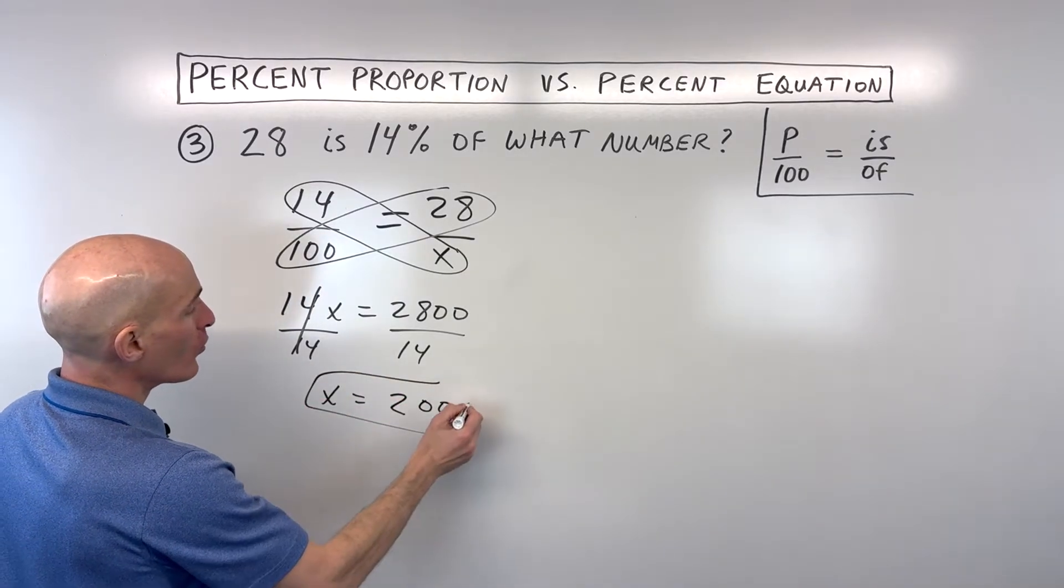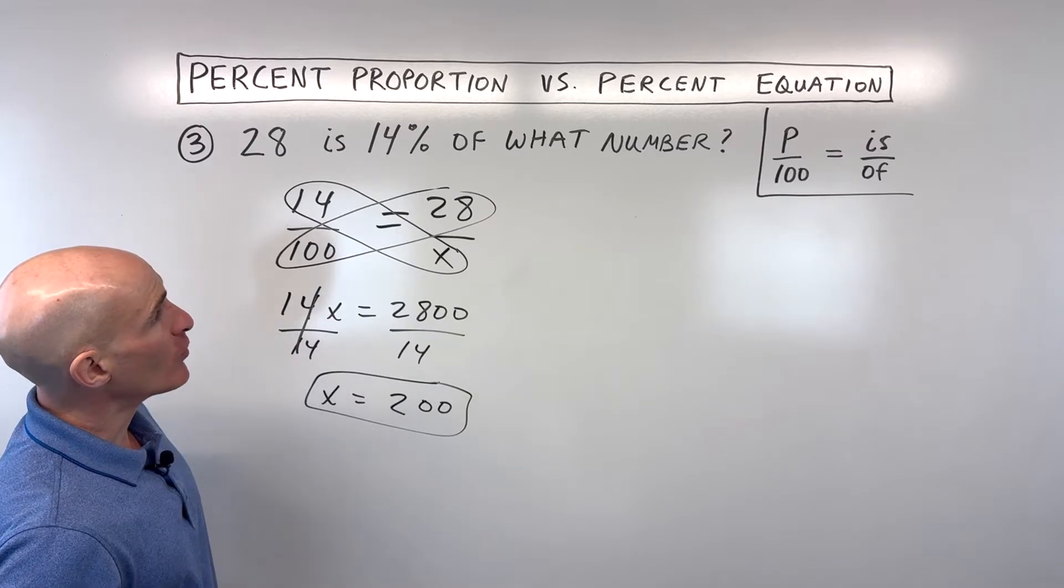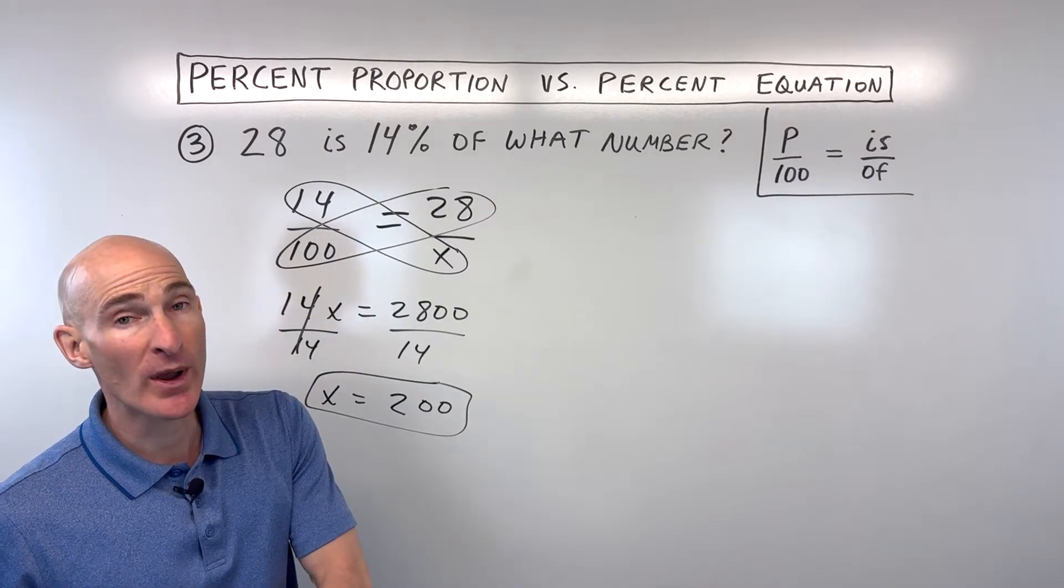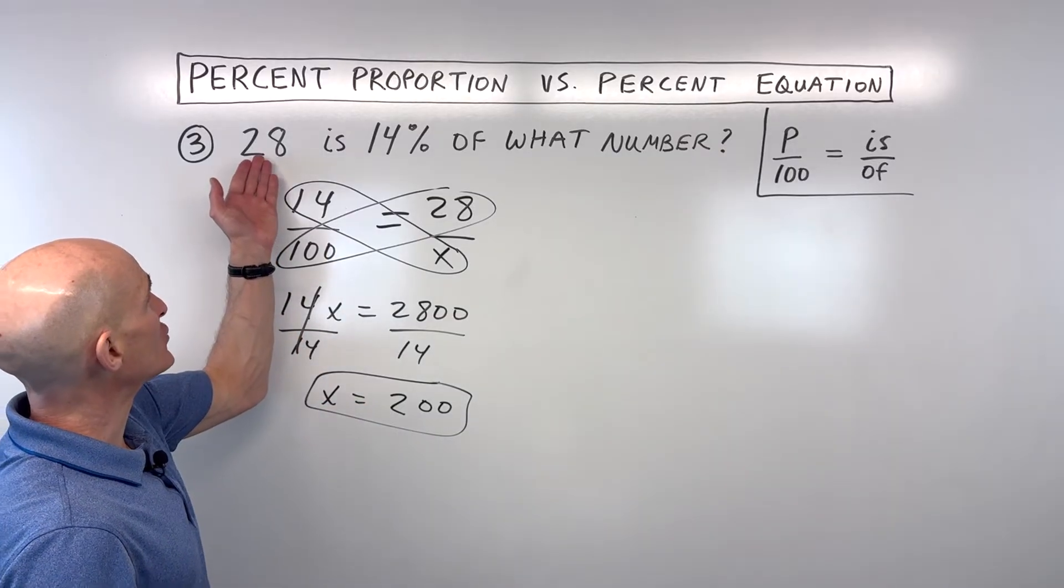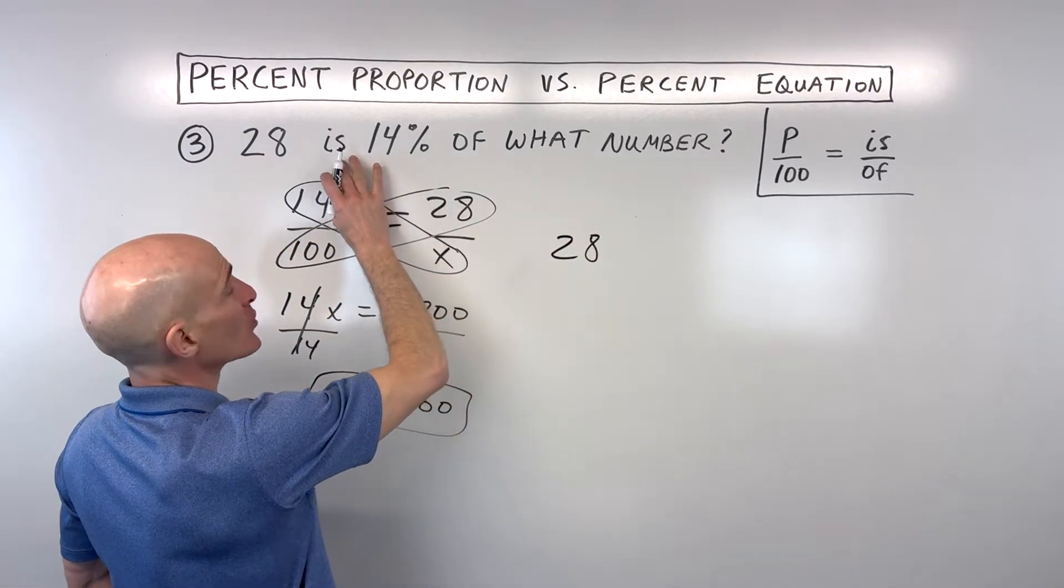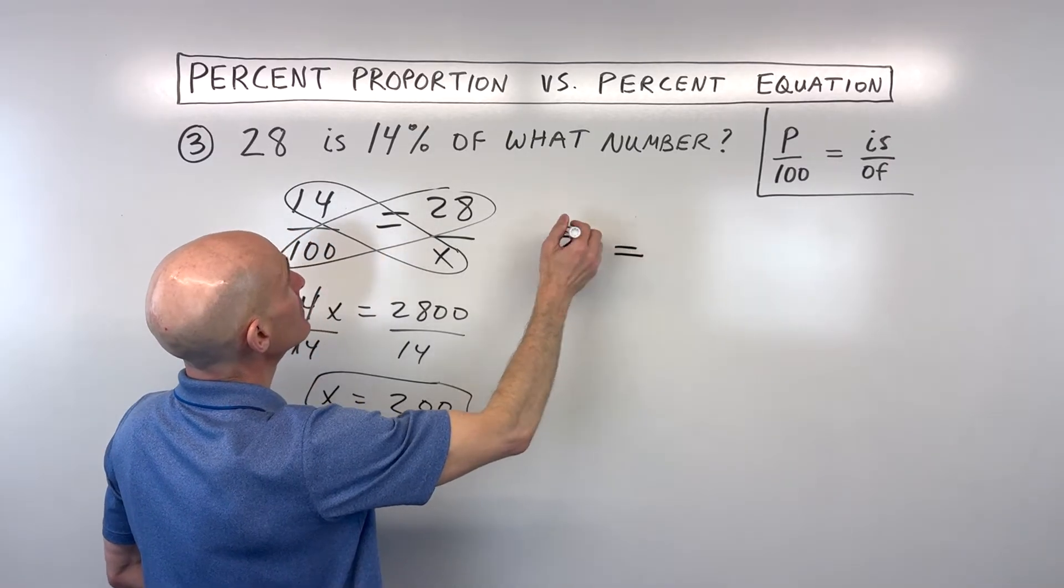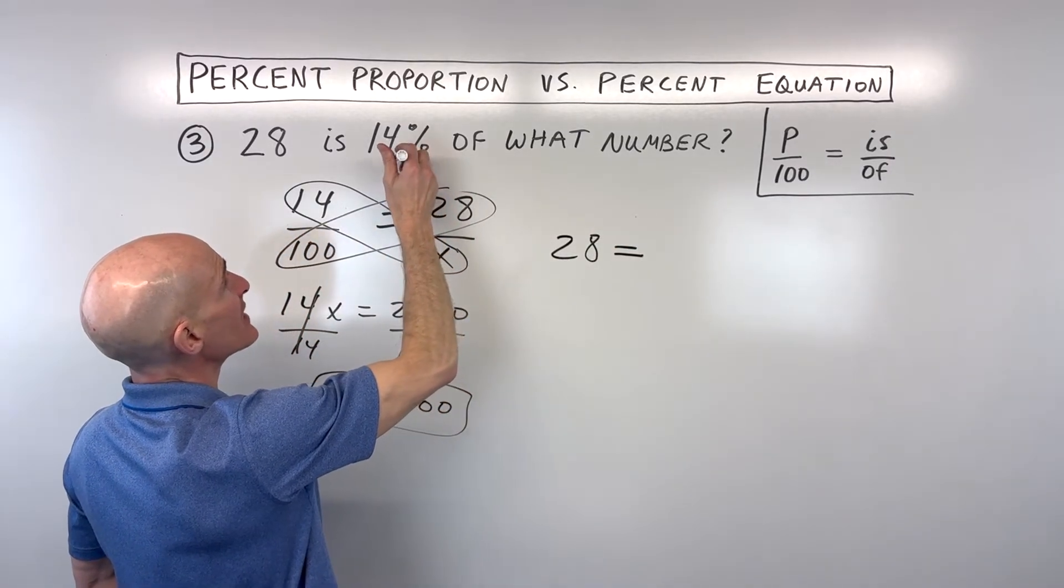So now we've got our number and we want to look at it from the percent equation method. How do we do that? Well, it's just like translating. We say 28, when you see the word 'is', that means equals, 14%. Remember as a decimal, we move that decimal point two places to the left to go from a percent to a decimal, so 0.14.